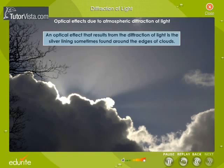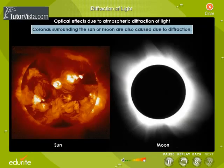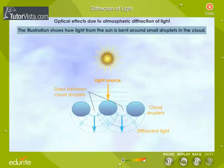Optical effects due to atmospheric diffraction of light: An optical effect that results from the diffraction of light is the silver lining sometimes found around the edges of clouds. Coronas surrounding the Sun or Moon are also caused by diffraction.